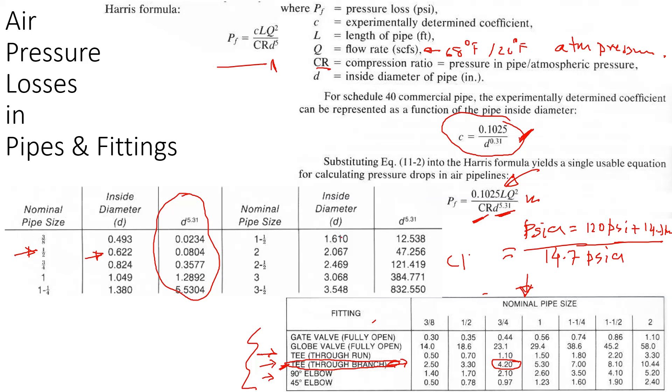I have explained how to use this friction loss calculation formula. Once we know the pressure loss in a system we can calculate the horsepower loss, cost, and things like that.